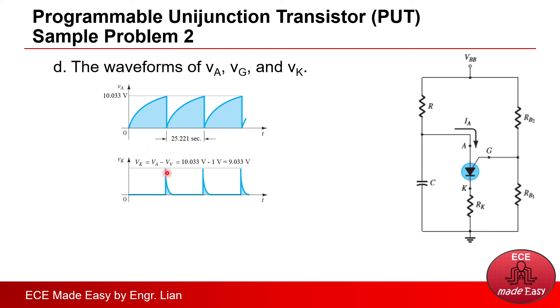So remember, while the capacitor is still charging, the PUT is still off, and there's no current passing through the PUT, or there's no current passing through RK. Therefore, the voltage across that area is 0.